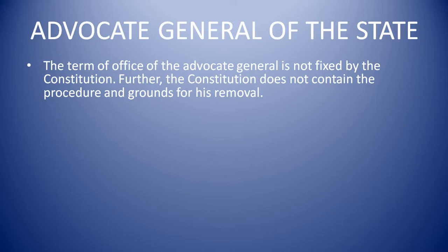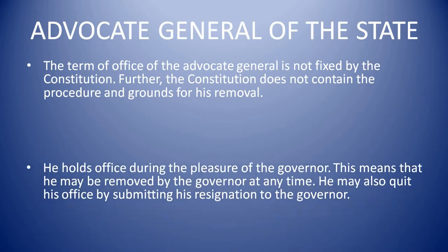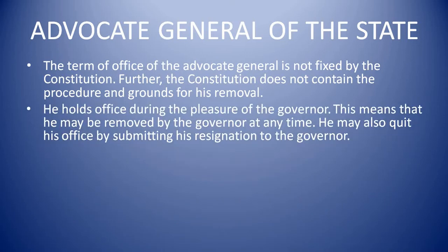The term of office of the Advocate General is not fixed by the Constitution. Further, the Constitution does not contain the procedure and grounds for his removal. He holds office during the pleasure of the governor, which means that he may be removed by the governor at any time. He may also quit his office by submitting his resignation to the governor.